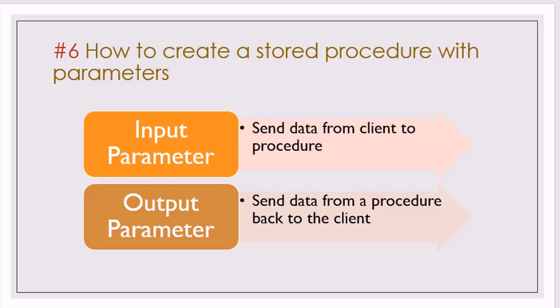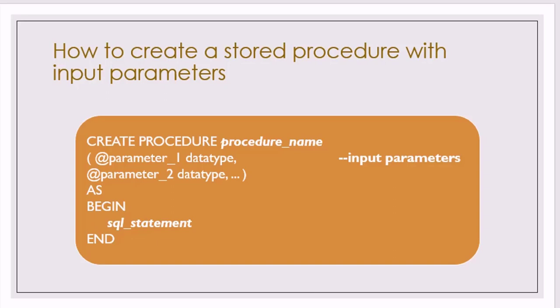Next, let's understand how to create a stored procedure with parameters. There are two types: an input parameter, which sends data from the client side to the procedure, and an output parameter, which is the reverse — sending data from the procedure back to the client. For an input parameter, after the procedure name use brackets, and inside specify the parameter name and data type. Parameter names must start with the @ symbol.